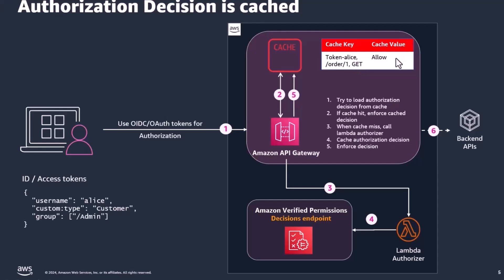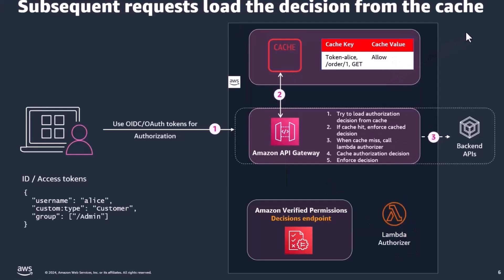Now that we understand this at a high level, let's see what happens when Alice calls this API again. Similar to before, Alice presents a set of ID tokens or access tokens calling the API to Amazon API Gateway. As a first step, Amazon API Gateway checks whether the decision is cached. It finds that the token, the HTTP path, and the HTTP method have a cached entry, which is an allowed decision. Because it has found a cached decision, API Gateway directly calls the backend application.